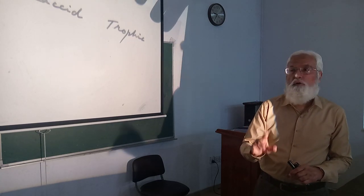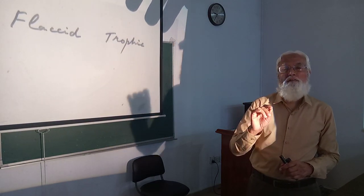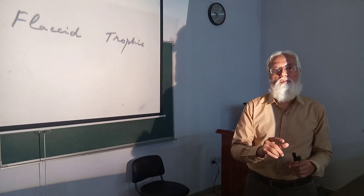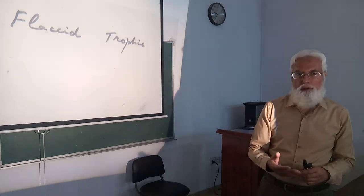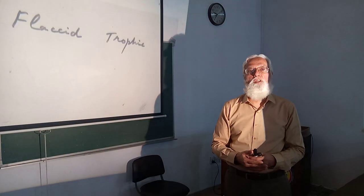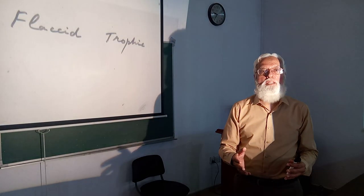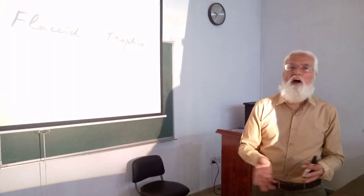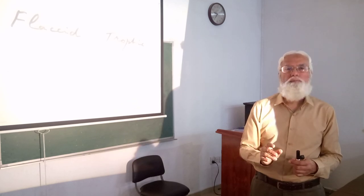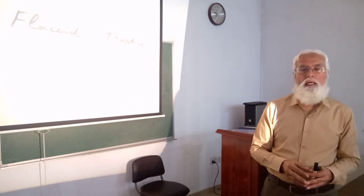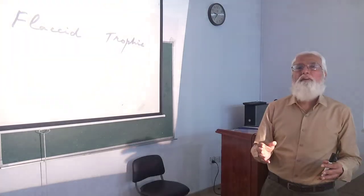When there is lower motor neuron lesion, there is damage to the alpha motor neurons or to the anterior motor nerve root. This results in the lower motor neuron lesion with muscle atrophy due to loss of the trophic action of the nerves.